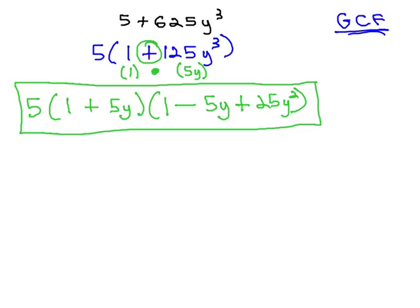We found this answer by first factoring out the GCF, then noticing there were two terms, using one of our factoring shortcuts. We can check this answer to be sure it's correct by multiplying it out.